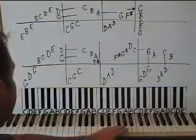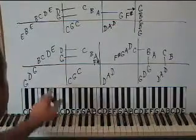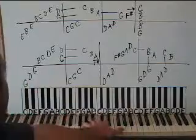So, G octave and the fifth: G below middle C for the pinky, D above that for the fifth, and G on the thumb.